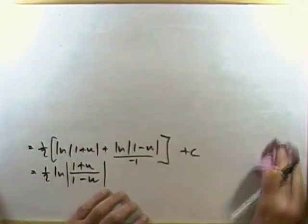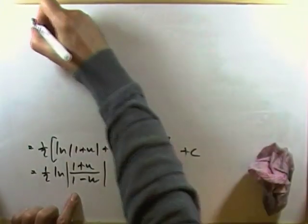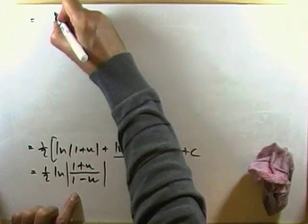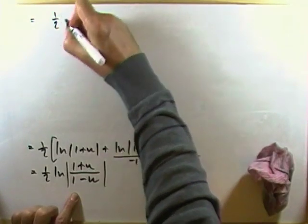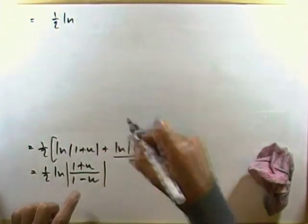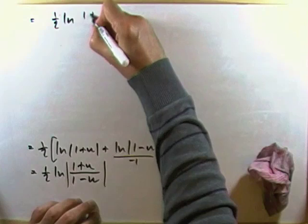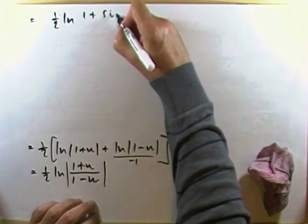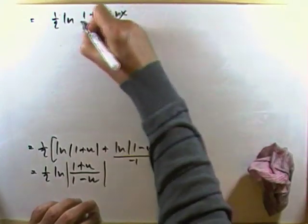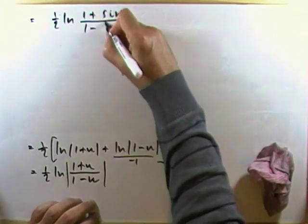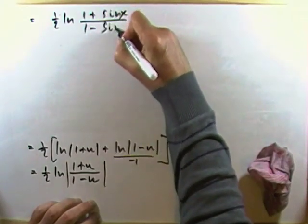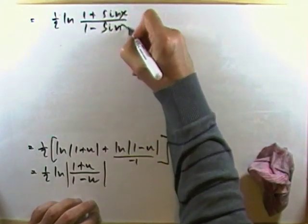Now I need to substitute back. Since u equals sin x, this becomes a half of ln of 1 plus sin x over 1 minus sin x.